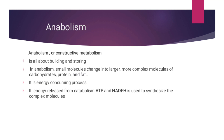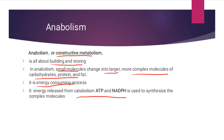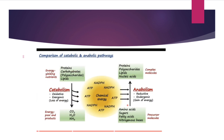اس کے بعد آتا ہے anabolism۔ Anabolism کو constructive metabolism بھی کہتے ہیں کیونکہ اس process میں simple molecules جوڑ کر complex molecules بناتے ہیں۔ یہ all about building and storing ہے — مطلب energy store ہوتی ہے اور simple molecules سے complex molecules بنتے ہیں۔ جیسے small molecules سے large complex molecules of carbohydrate, protein, and fat بنتے ہیں۔ اس میں energy کی ضرورت ہوتی ہے جو catabolism میں release ہوئی تھی، یعنی ATP اور NADPH، یہ complex molecules synthesize کرنے کے لیے use ہوتی ہے۔